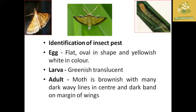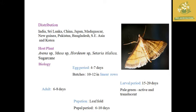In terms of worldwide distribution, leaf folders are mainly found in India, Sri Lanka, China, Japan, Madagascar, New Guinea, Pakistan, Bangladesh, as well as Southeast Asian and Korean countries.